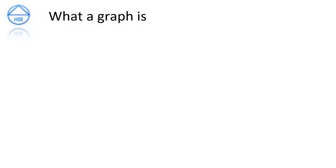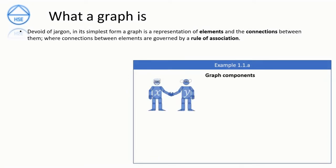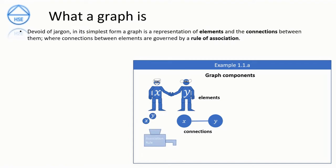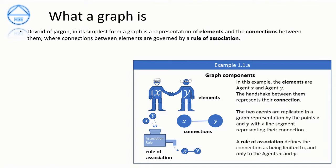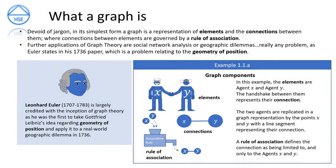What a graph is: devoid of jargon, in its simplest form a graph is a representation of elements and the connections between them, where connections between elements are governed by a rule of association. This is shown in Example 1.1.a, 'Graph Components', where elements are shown by Mr. X and Mr. Y shaking hands, the connection being the line segment between points X and Y, and the rule of association mapping the points X and Y to one another. Further applications of graph theory include social network analysis and geographic dilemmas — really any problem which, as Euler states, is a problem relating to the geometry of position.